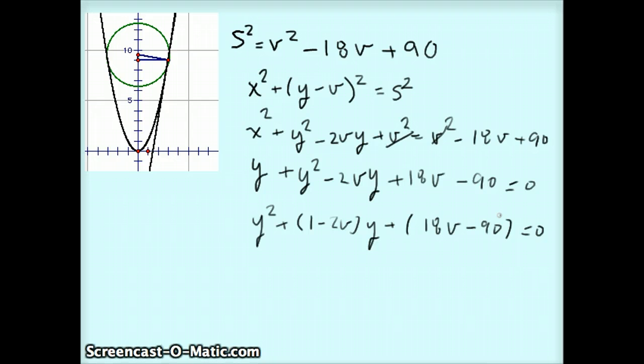Since this is the equation you would solve to figure out where the circle intersects the tangent line, well, we want it to intersect just once, and that happens if you have a quadratic equation. If the discriminant equals 0, there'll be just one solution, and that's what we're going to do. We're going to set the discriminant equal to 0.